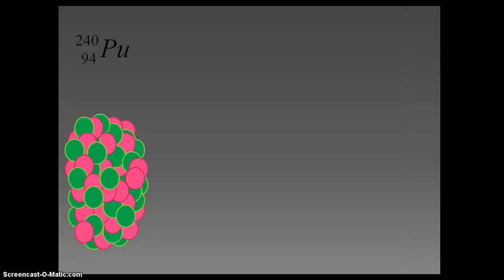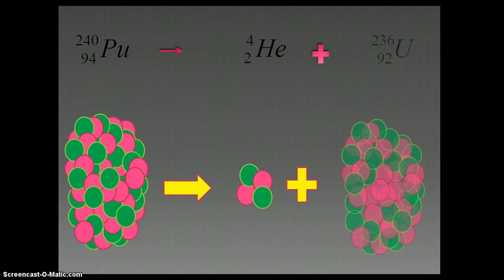In this case, what would happen is we would lose two protons and two neutrons, and a helium nucleus would be emitted, and we would end up with an isotope of uranium, uranium-236.